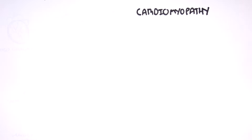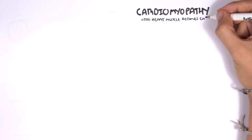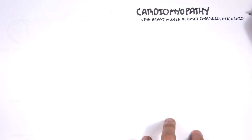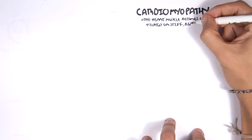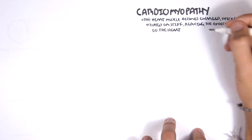The next cardiovascular disease is cardiomyopathies, which involve the muscles of the heart — cardio meaning heart, myo meaning muscle, pathies meaning abnormality. Cardiomyopathies is where the heart muscles become enlarged, thickened, or stiff, reducing the effectiveness of the heart and leading to heart failure. There are three main types: dilated cardiomyopathy, hypertrophic cardiomyopathy, and restrictive cardiomyopathy.